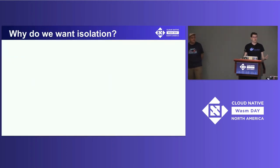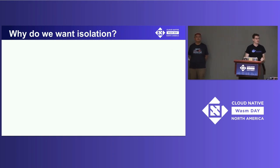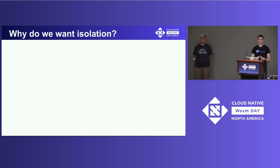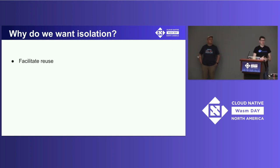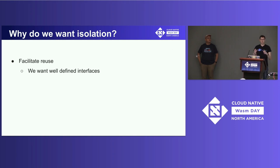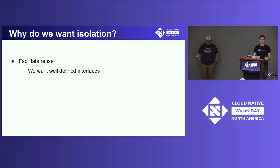When I was thinking about this talk, it got me thinking about why we want isolation. It's quite prevalent in software — we have isolation and separation in lots of different places. The first case is facilitating reuse. When you build well-defined interfaces, you can create boxes of value and reuse them — not just inside your own company, but share them with other people. That has a compounding effect of not rebuilding everything.